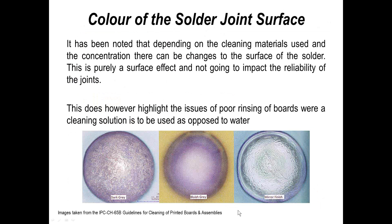Stepping back for a moment — when looking at cleaning materials, we want to make sure they're not going to affect the visual appearance of the board, component, or solder joint. These are three examples of visual appearance changes that can occur with certain materials used in the process. Chemistry suppliers will be able to provide guidance. We don't want to take the nice shiny appearance off solder joints and end up with a dull appearance purely because of the cleaning chemistry or process being used.